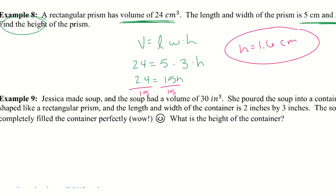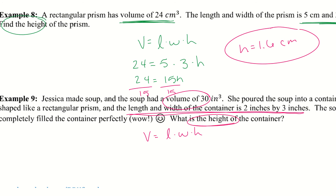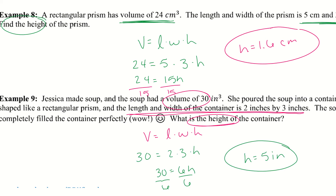Example nine: Jessica made soup with a volume of 30 inches cubed and poured it into a rectangular prism container with length 2 inches and width 3 inches. It filled the container perfectly. Using V = l × w × h: 30 = 2 × 3 × h, so 30 = 6h, and the height is 5 inches.